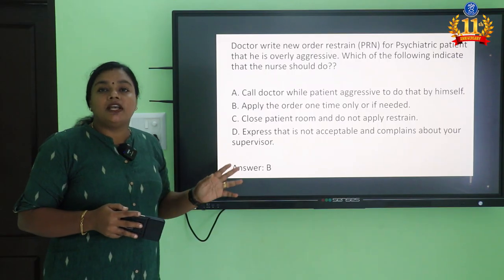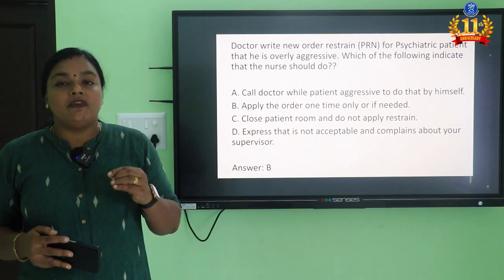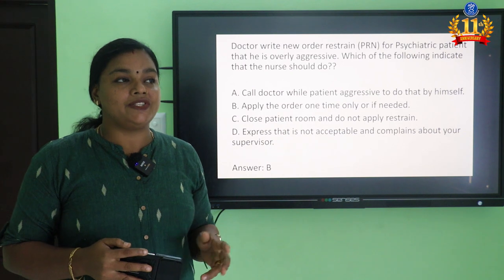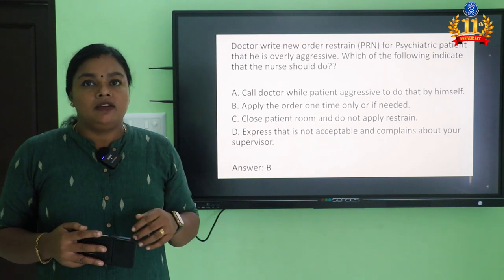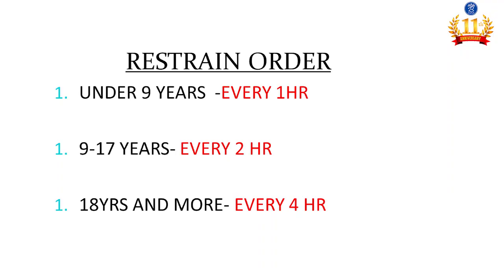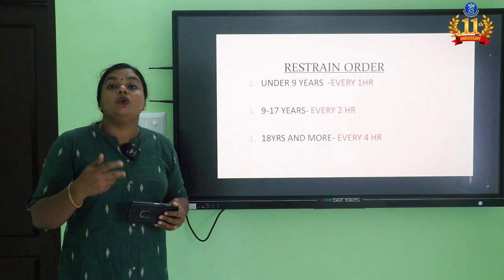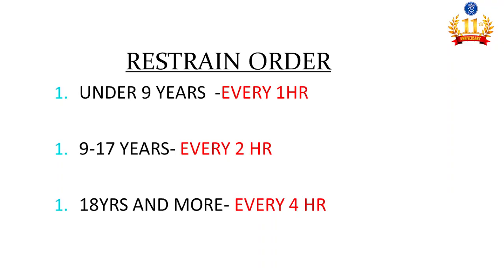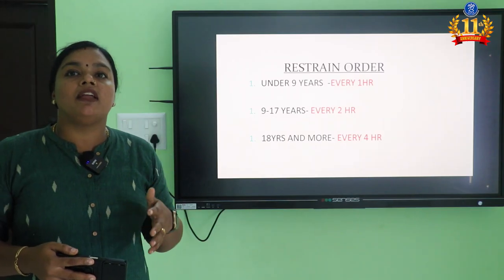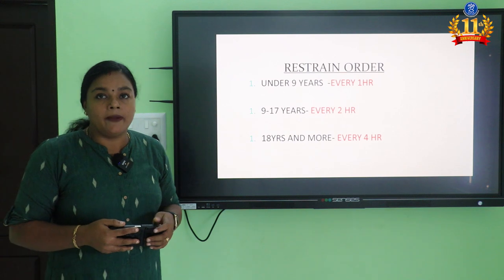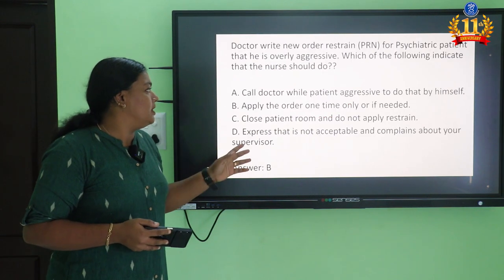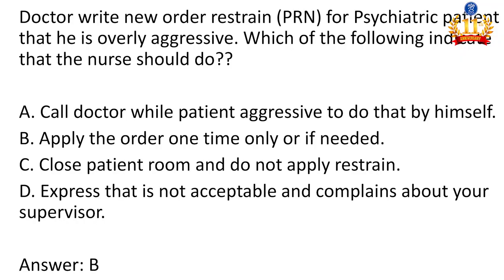The question is about restraint. For psychiatric patients, restraint is regularly given for aggressive patients. The order for restraint is very important. Under 9 years old, we need to change the restraint every 1 hour. From 9 to 17 years, every 2 hours. For 18 years and more, every 4 hours. Beyond this time with one restraint is malpractice. The answer is apply the order one time only if needed.